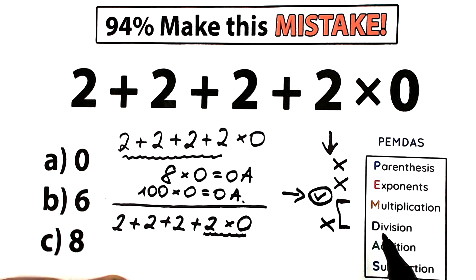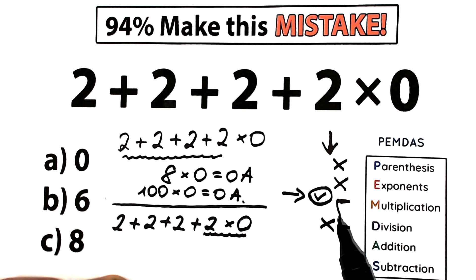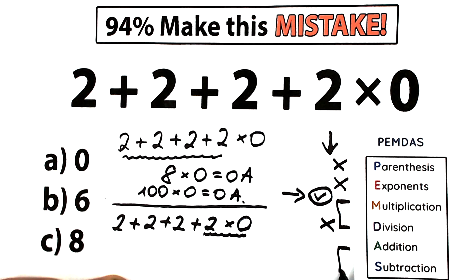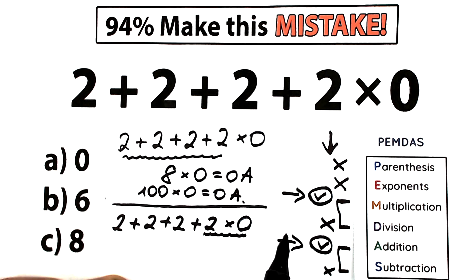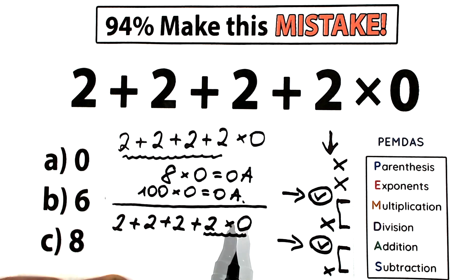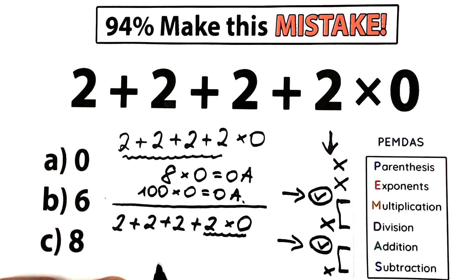So we have a multiplication part. After that comes the addition and subtraction group — we don't have any subtraction sign, but we have addition signs. So as you can see, we only have two steps: multiplication and addition. Multiplication always comes before addition, so we multiply first, and then we add. This is the main rule you should learn from this video.